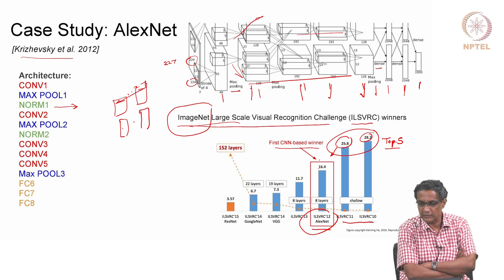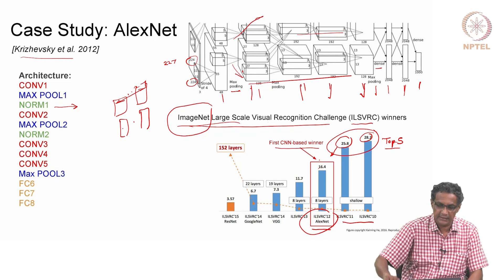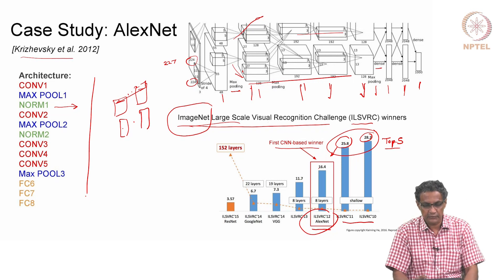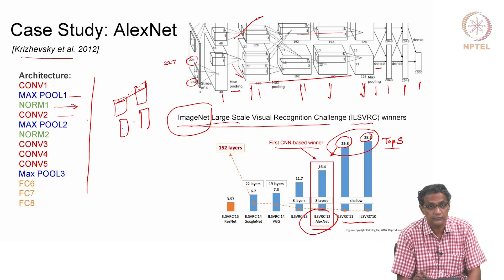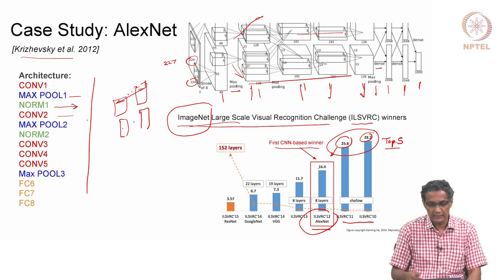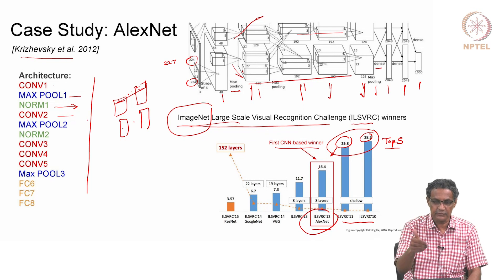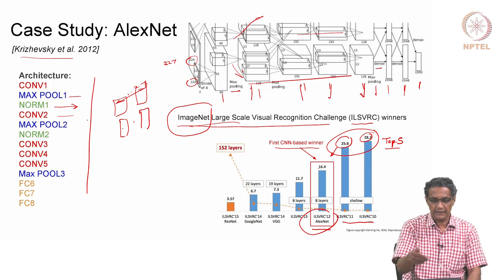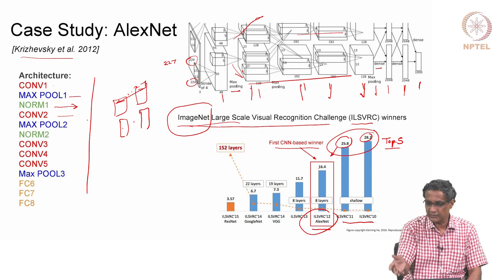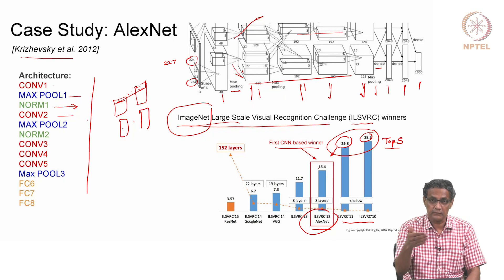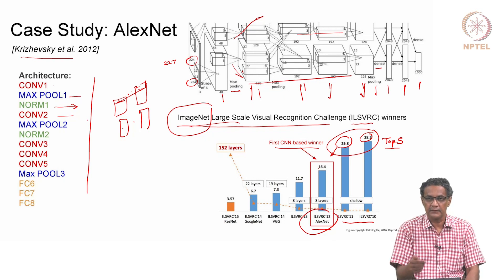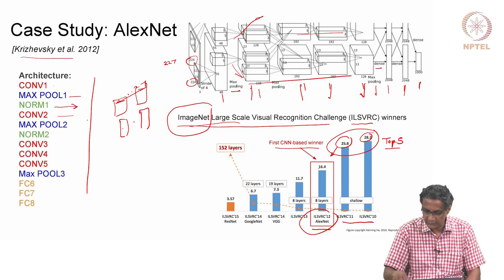When somebody defines an architecture for a neural network, they will say conv1, max pool1, norm1, conv2, and so on. That means there is an input, then a convolutional layer (first convolutional layer), then max pooling happens the first time, then this norm - something specific to this network called response norm. I don't think people use that anymore. Then second convolution layer, second max pooling, second norm, then convolution 3.